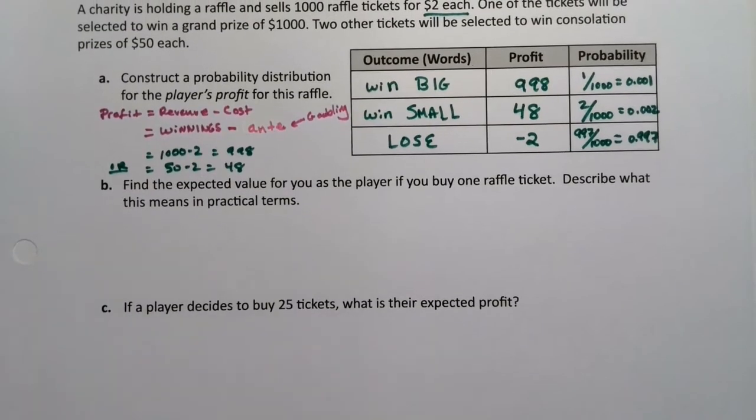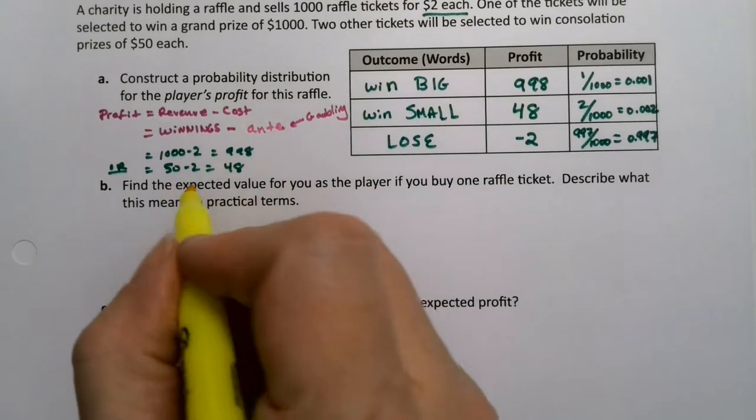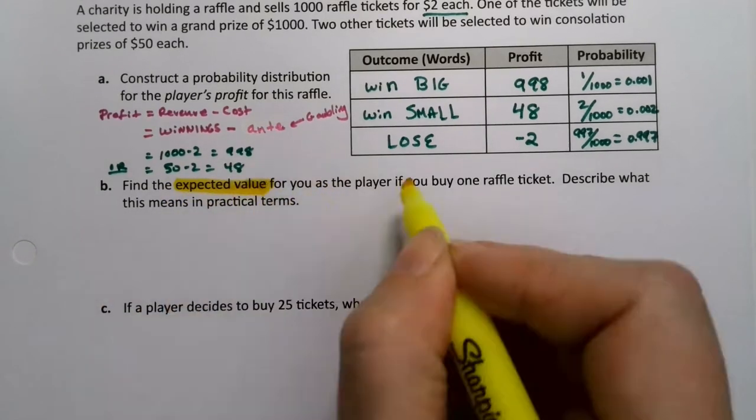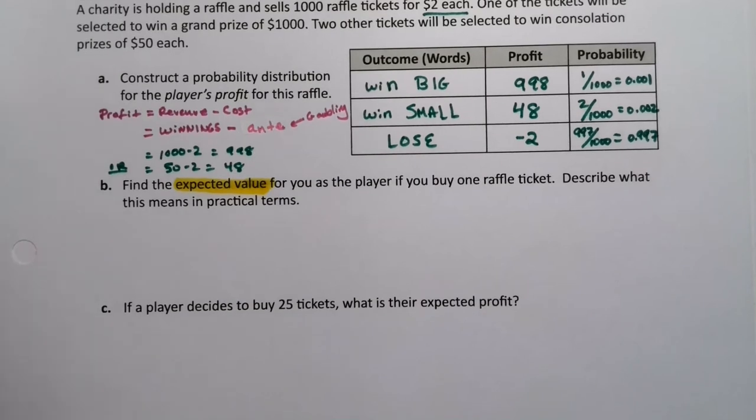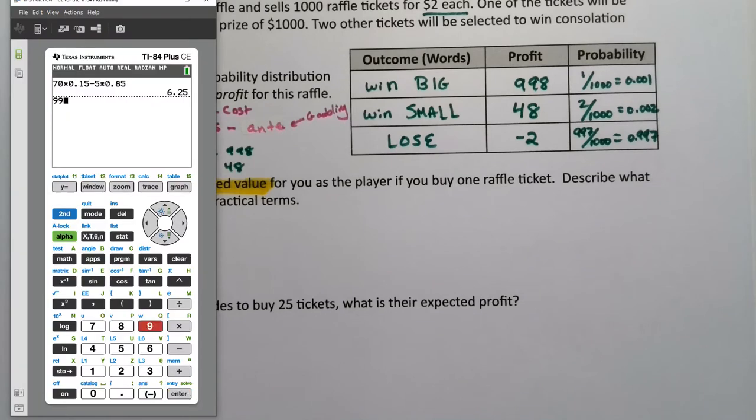All right. So now let's go find those magic words, expected value of profit. So expected value for you. And that's the way we set up the table. We set up the table as a player would. So we're going to go find the expected value. So we could multiply with a calculator. If we want to do this by hand, we could take 998 times 0.001 plus 48 times 0.002, and then minus, because it's negative, two times 0.997. There we have it.